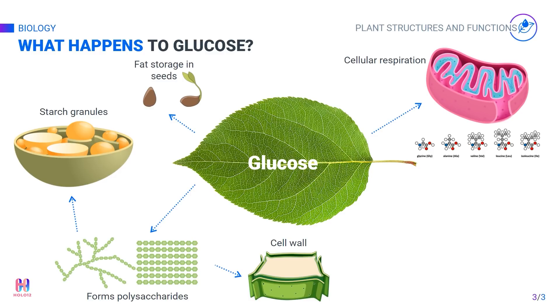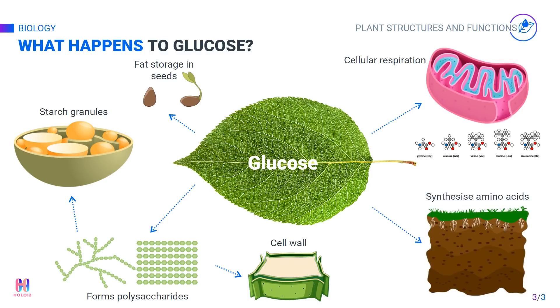Finally, glucose can also combine with nitrates, an important component of the nutrients in the soil, to create amino acids. Amino acids are the monomers that make proteins.